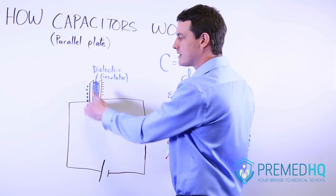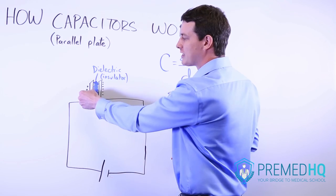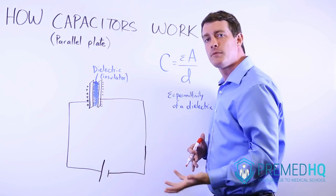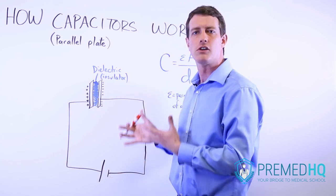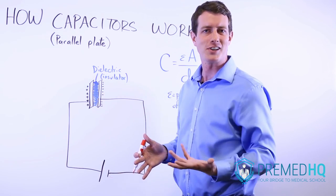And you end up with the absence of negative charge because as soon as electrons get over there, they disappear. You end up with the absence of negative charge, which is often considered a positive charge on the other side of the capacitor.